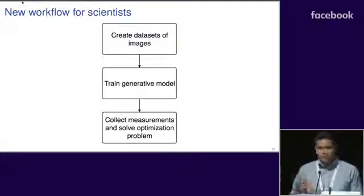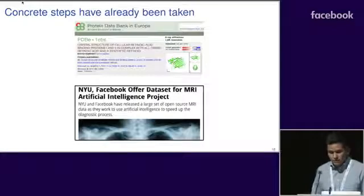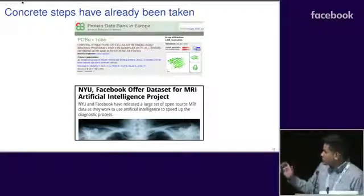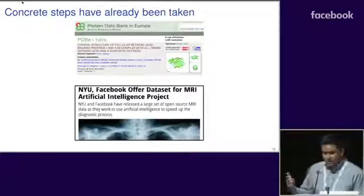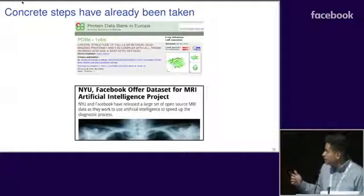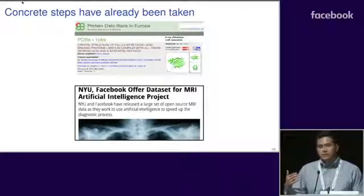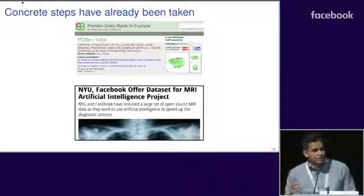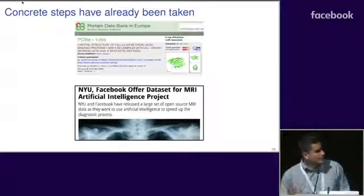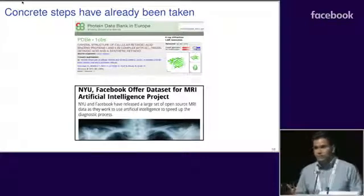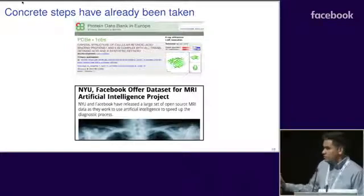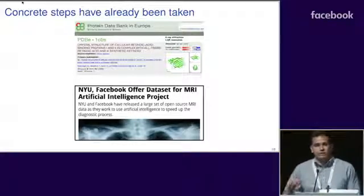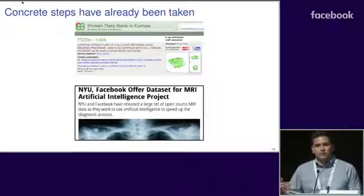There's actually already been work done in trying to create these types of datasets. The first image that you see on top is a screenshot from the Protein Databank website where it has thousands of images of these crystallographic structures that you see in X-ray crystallography. In addition, NYU and Facebook just teamed up and made a new dataset for MRI imaging. This actually happened within the past week or so. This is definitely an avenue of research that's gaining traction.